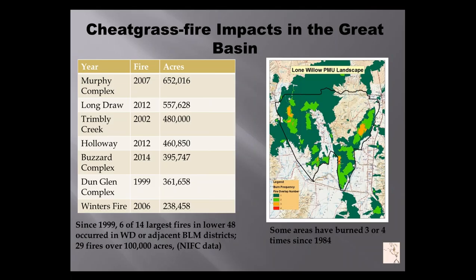The image on the right is one particular landscape in the Winnemucca District, right on the Nevada-Oregon border — the Lone Willow Population Management Unit. It's identified by U.S. Fish and Wildlife Service as a sagebrush focal area, part of the range-wide analysis on protecting greater sage-grouse from listing under the Endangered Species Act. We've had some areas that have burned three or four times since 1984, based on Landsat data. That mountain range on the western side, the Bilt Creek Mountains, has been particularly hit hard — 61 fires over 1,000 acres since 1984.